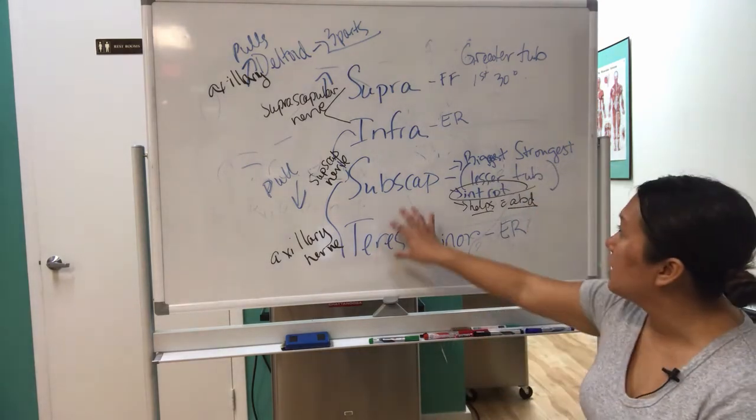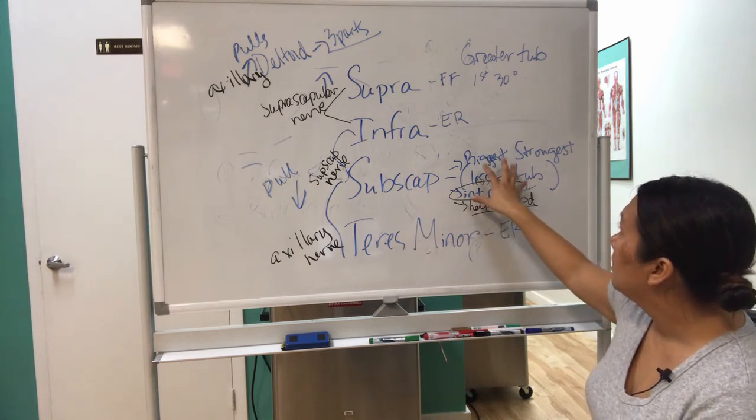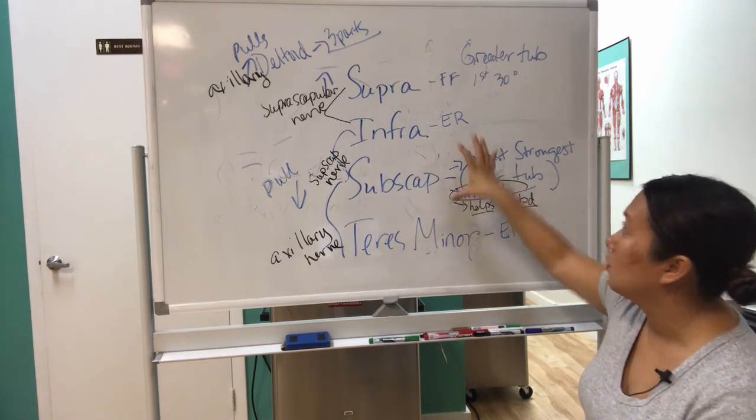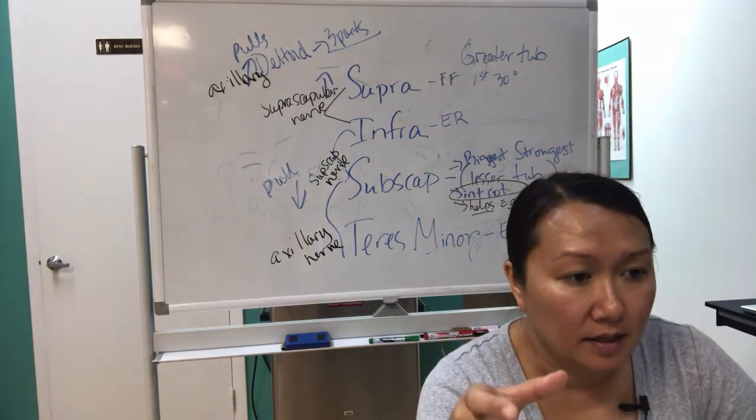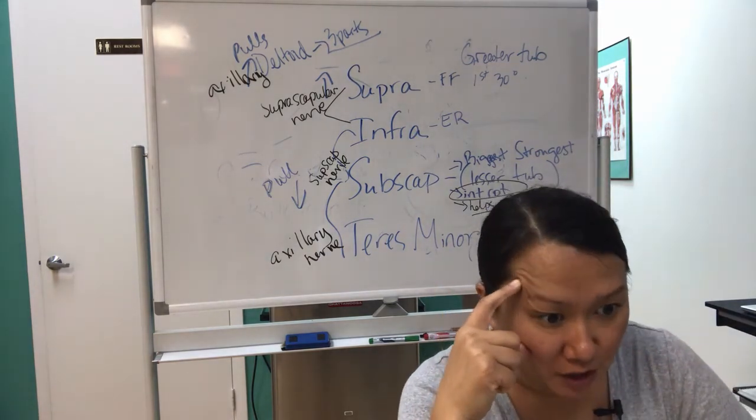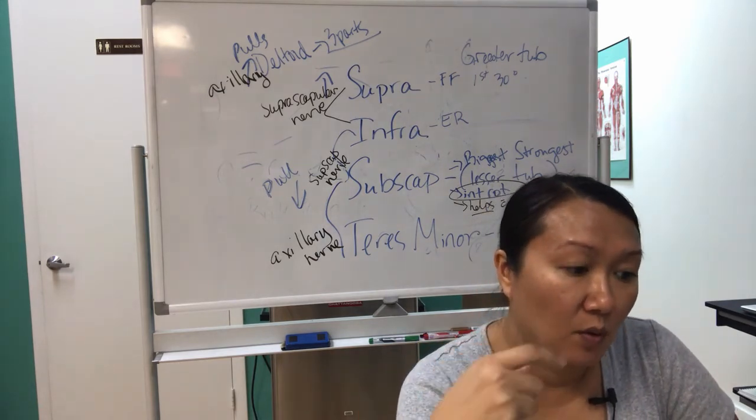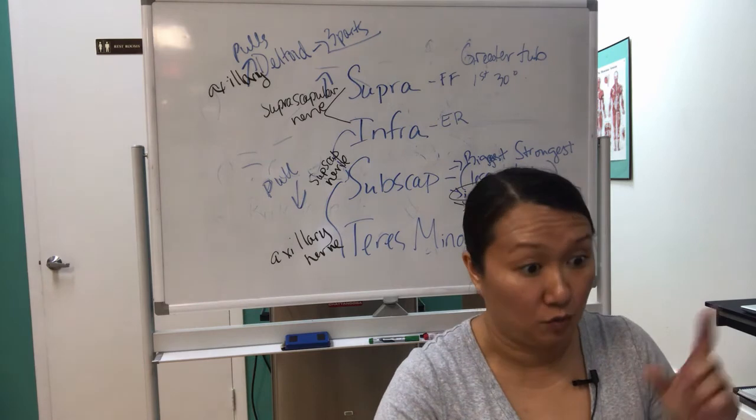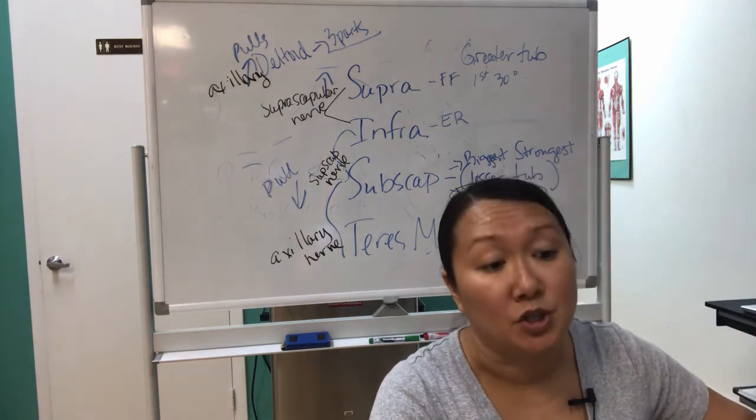So when you understand this muscle helps with external rotation, which test is going to test external rotation? So then when you read the test questions, it's going to come down to, well, that test is going to test for external rotation. I know these two muscles do external rotation.